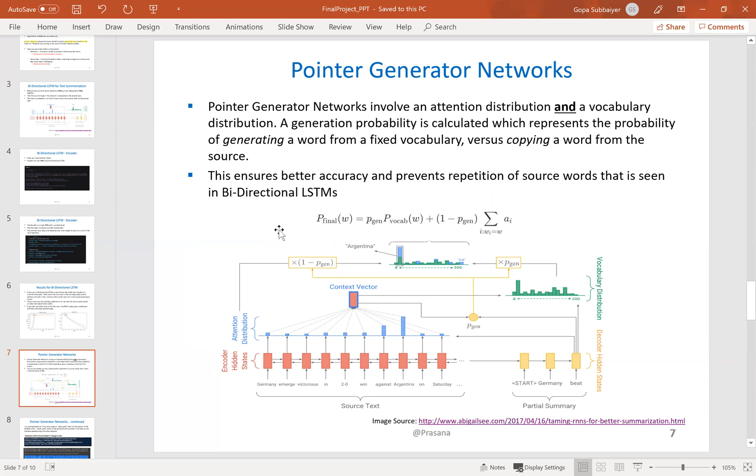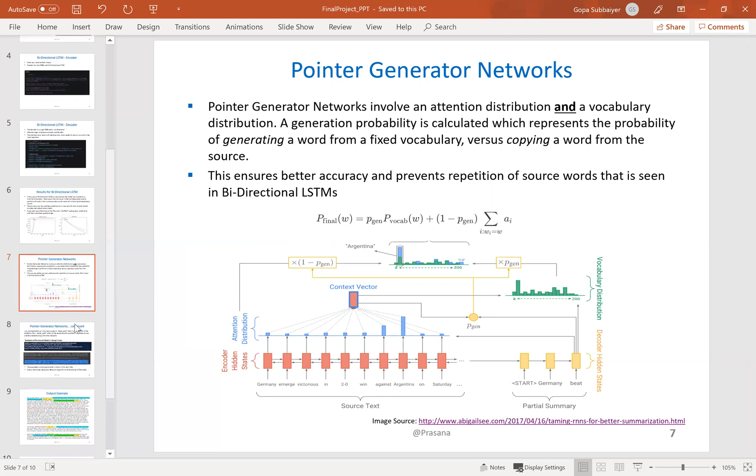The generation probability, pgen, is used to weigh and combine the vocabulary distribution and the attention distribution into a final distribution, as shown in this formula.